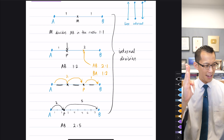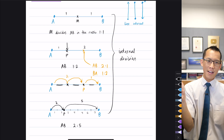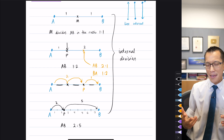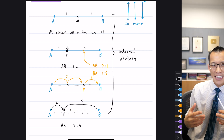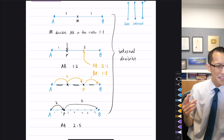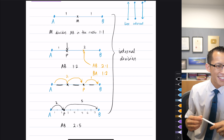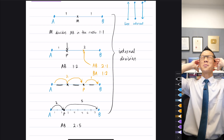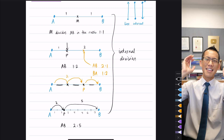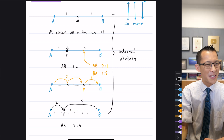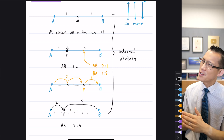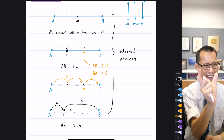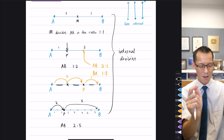The reason it's called internal division is exactly as the name suggests - you end up inside the interval. So A's here, B's here, you end up somewhere in between. Now you might be able to guess from the name - if there's such a thing as internal division, there is also such a thing as external division, which is so weird to me because as the name suggests, you end up outside. Which is like, hold on - are you even dividing up the thing anymore? You end up somewhere on the outside.